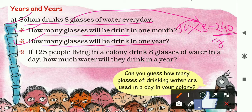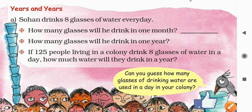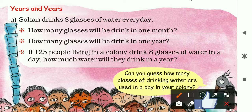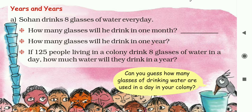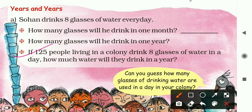Next: how many glasses will he drink in one year? In one day he is drinking 8 glasses, so multiply by one year which means 365 days. When you multiply, you will find the product as 2,920 glasses of water.